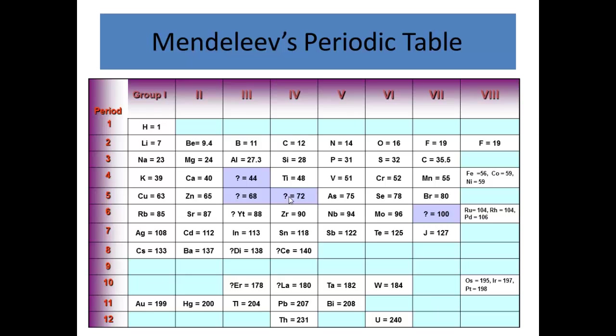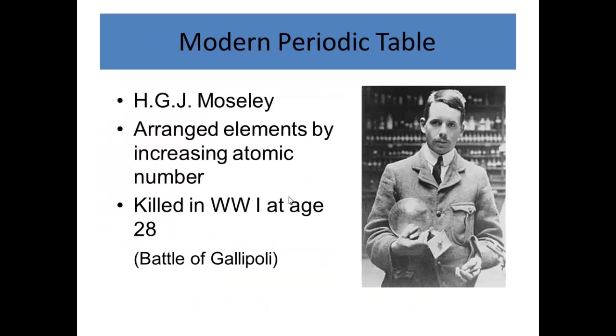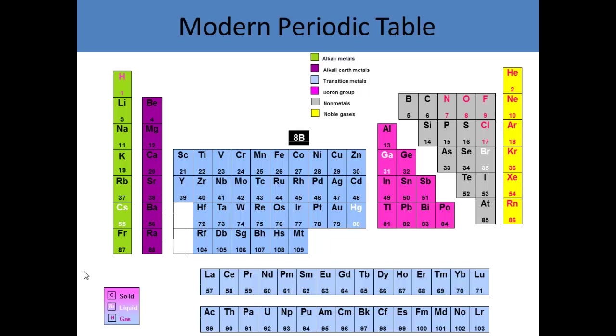Mendeleev predicted it by atomic mass, and we'll talk right now about Mosley. He arranged it by atomic number, by the number of protons, or positive charges in the nucleus. And he unfortunately passed away in World War I at the age of 28. So yeah, poor guy.